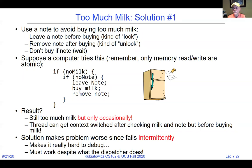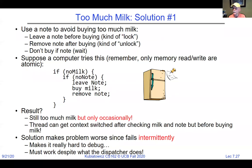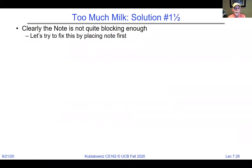Solution 2 with two notes still has a problem: each thread could leave their note just before checking for the other thread's note. A context switch at exactly the wrong time leads each thread to think the other one is doing it, and neither buys milk. This is a type of starvation. Early Unix had similar problems that would cause a crash maybe once a week.